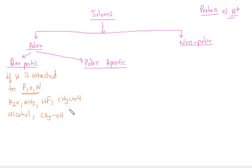So these are the examples of polar protic. Now we are having example of polar aprotic. It is just opposite. The hydrogen is not attached to fluorine, oxygen or nitrogen.